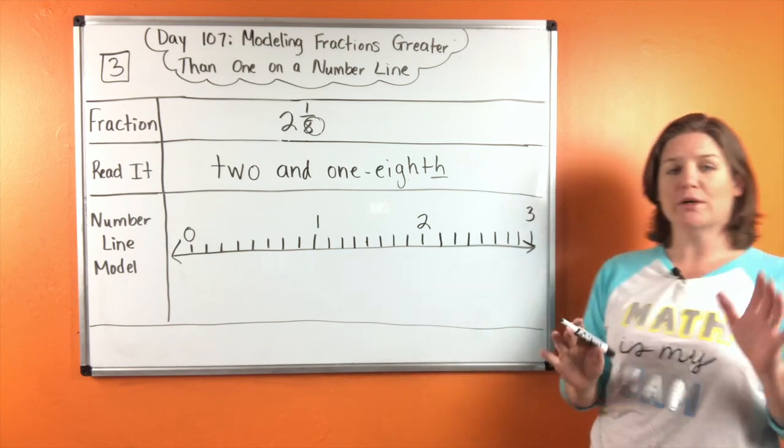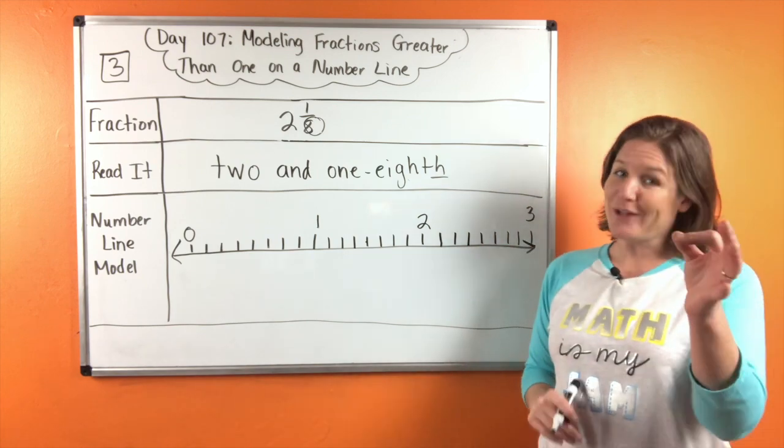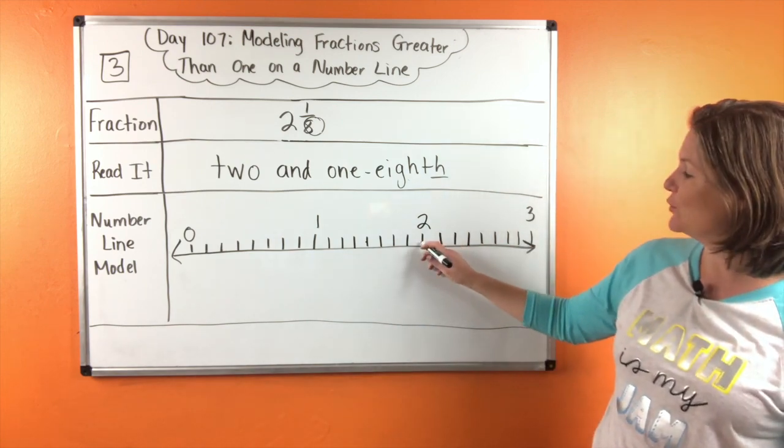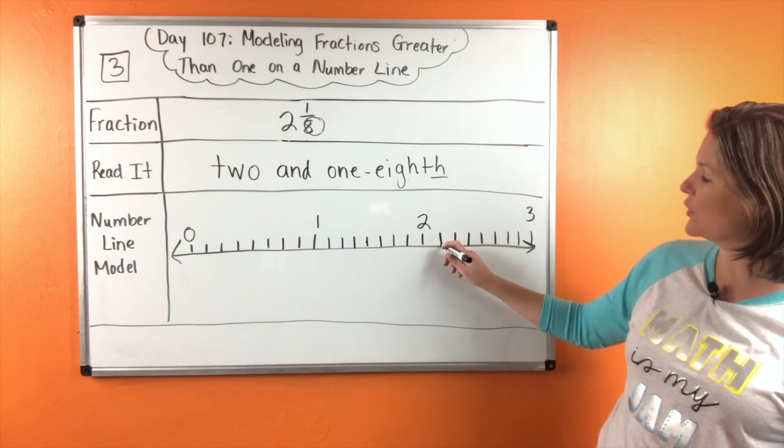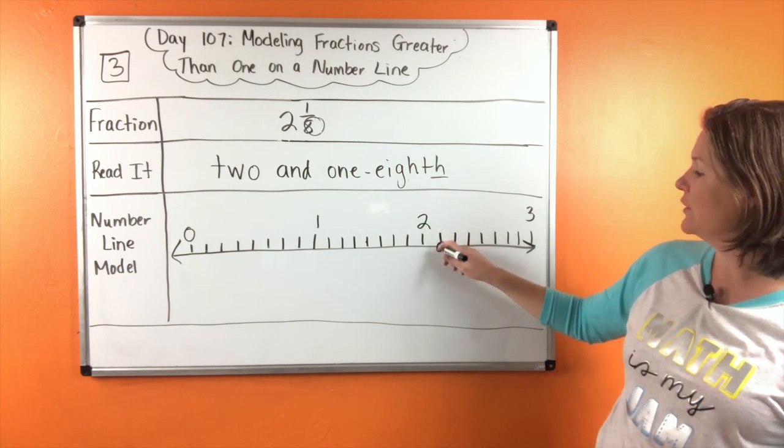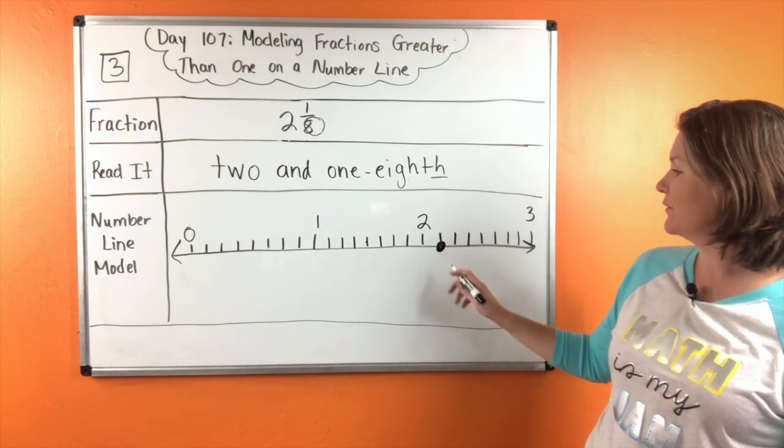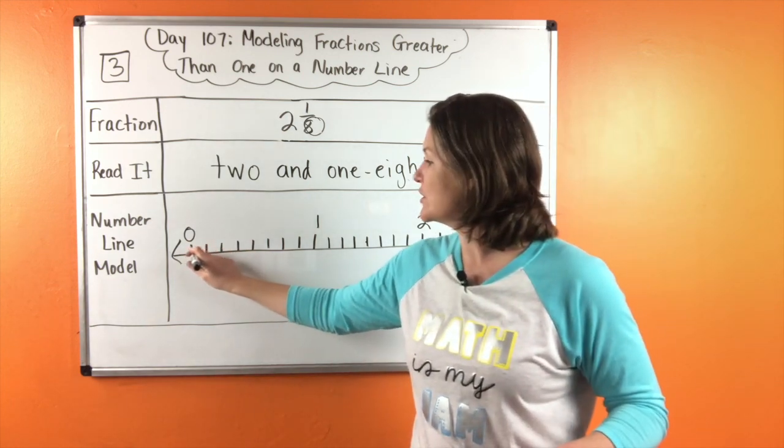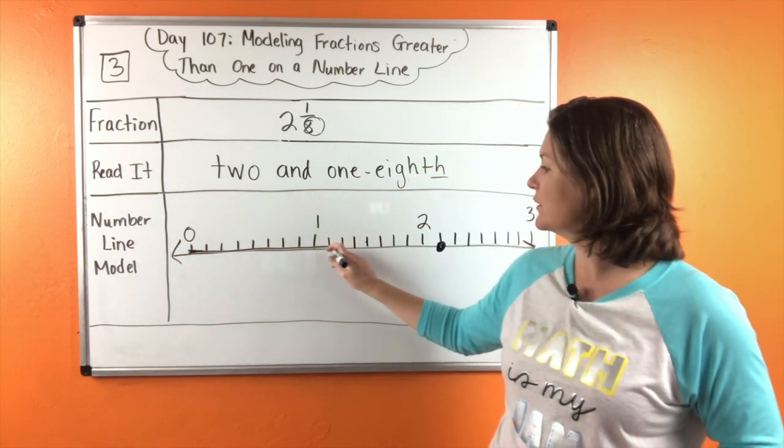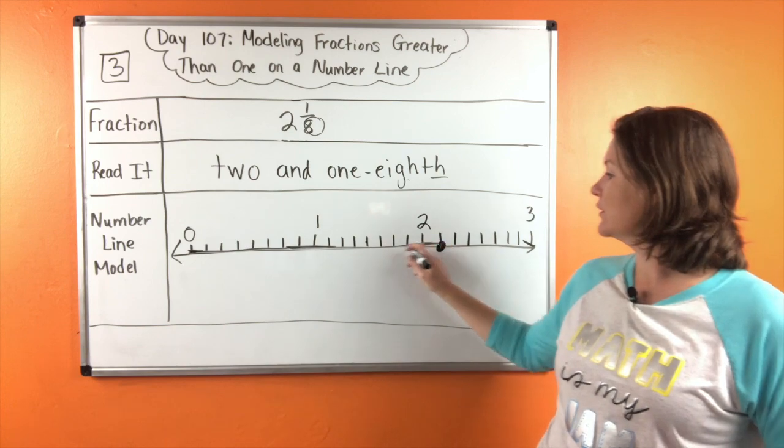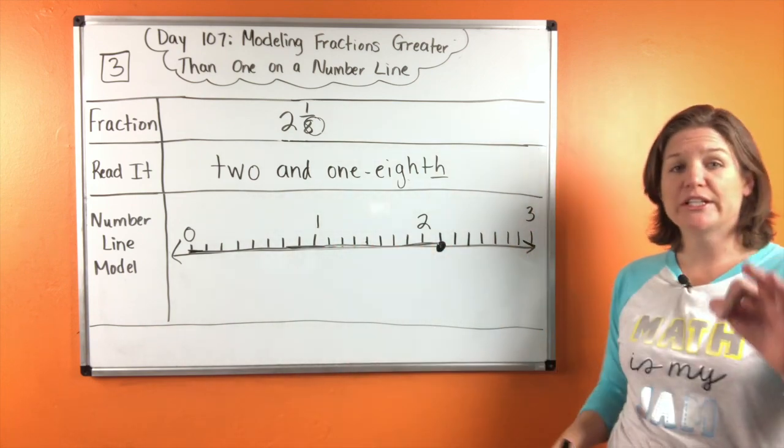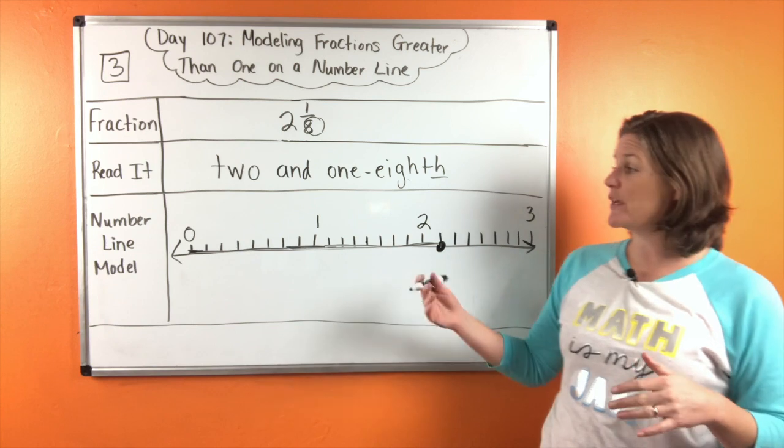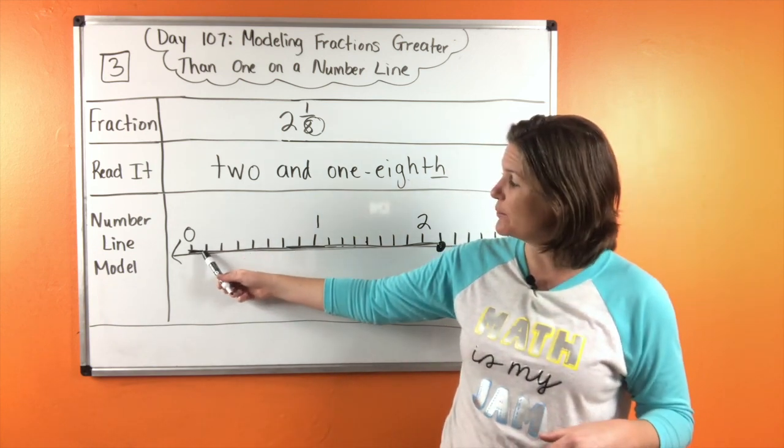I kind of was running out of room. But the important point is that we plot our point at two and one more jump, one eighth. Two and one eighth. So shade this. All right. And I want you to really look closely at mine and really look closely at yours.